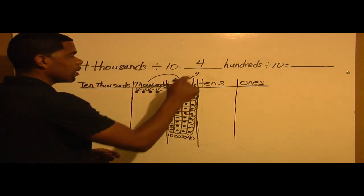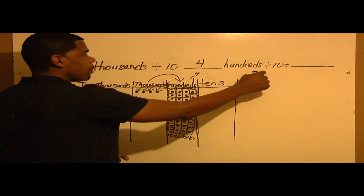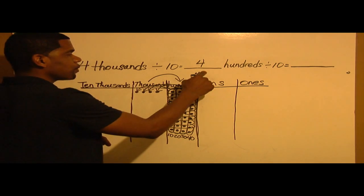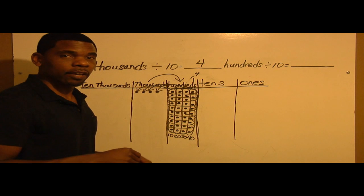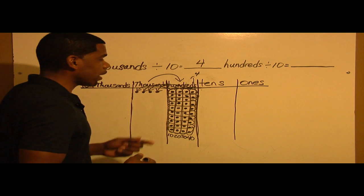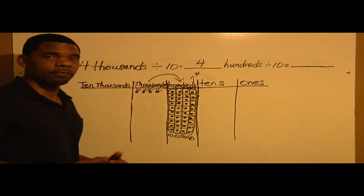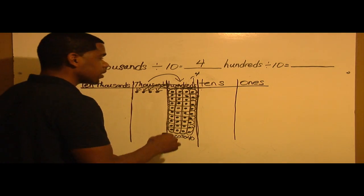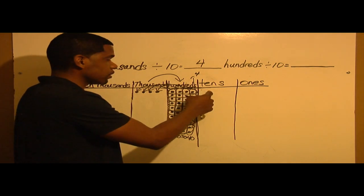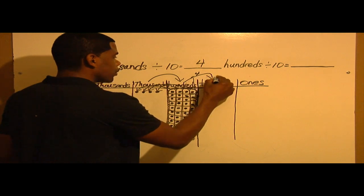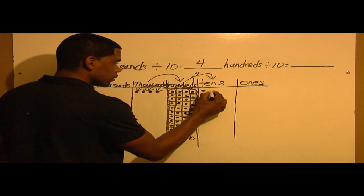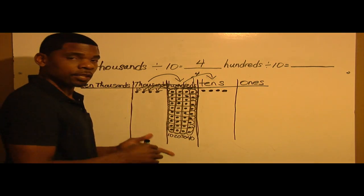So now we need to find out 4 hundreds divided by 10 is equal to what. We can go back to where we started. Now we need to represent 4 hundreds on the place value chart and make it into smaller units so we can divide. What would the place value chart look like if I change the hundreds to 10 smaller units within the tens? I'm going to draw an arrow and repeat the process. I have 4 groups of tens: 1, 2, 3, 4.